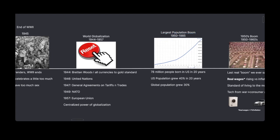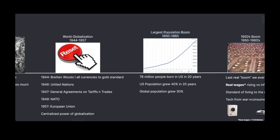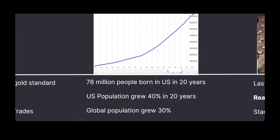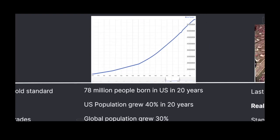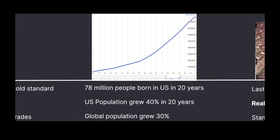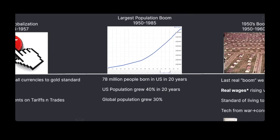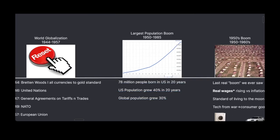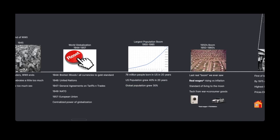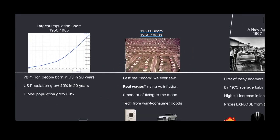After 1945 came the largest population boom we'd seen. From 1955 to 1985, over the course of about 20 years, 78 million people were born in the US — essentially a population growth of 40% in about 20 years. Global population grew about 30%. That's absolutely insane, because when population booms happen eventually down the line, each person's marginal utility and demand just rises more and more, and you have to place that on a global scale.